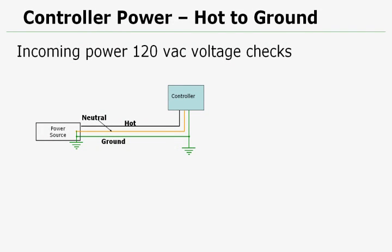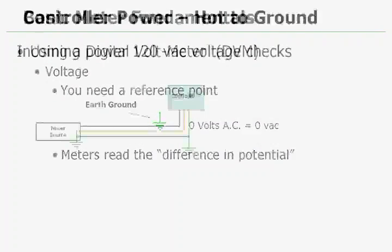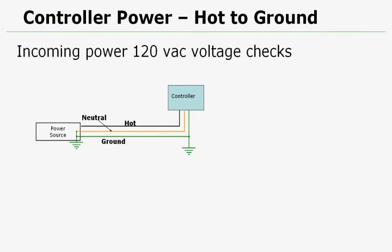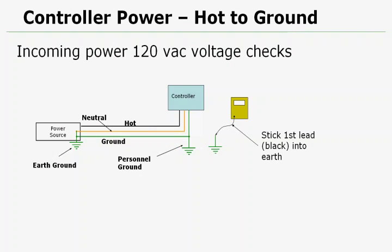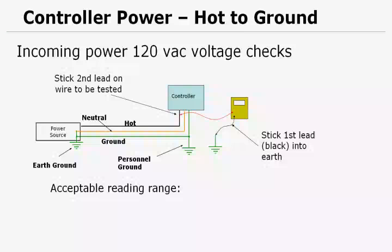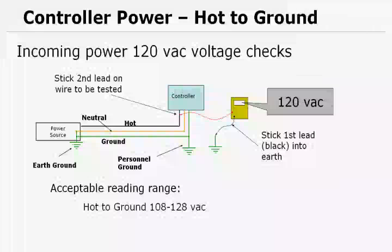So if we have a controller, and we want to read the power readings from hot to ground, looking at our diagram, we have the hot wire black, the ground wire green, the neutral wire in the middle is gold. And then our earth grounds are at our power source. We also have a personal ground which is at the controller, nothing more than a ground rod. Let's take the first lead and put it into the ground. Let's take the second lead and put it on to the hot, because we're reading the hot to ground reading. We should be in a range of 108 to 128 volts AC for the controller to be working correctly.